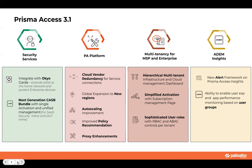With security services, there are two key features we're bringing out with 3.1. One is integration with Okio, where we're extending SASE to the home network, going to protect enterprise devices, going beyond what we have today with mobile users and remote network. We'll dive deeper on these features in the next few slides. I'm just going to cover a high level here.